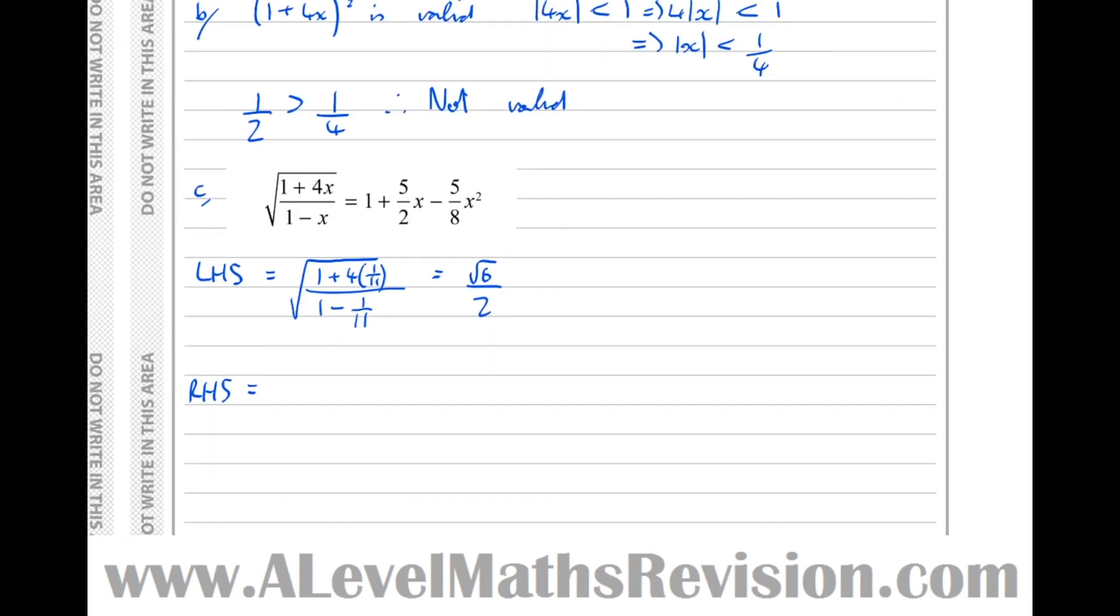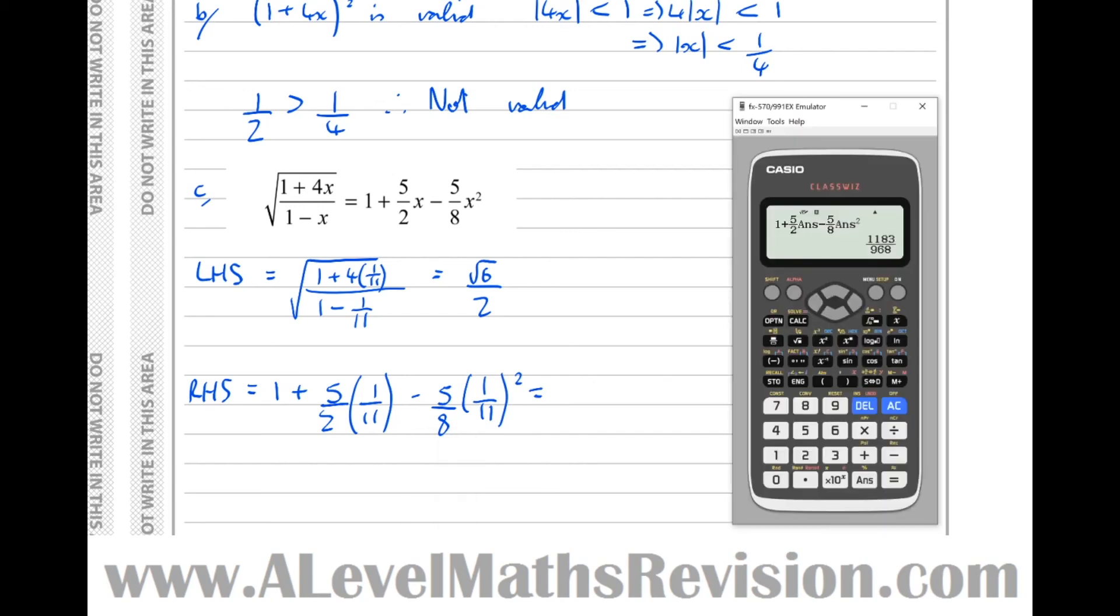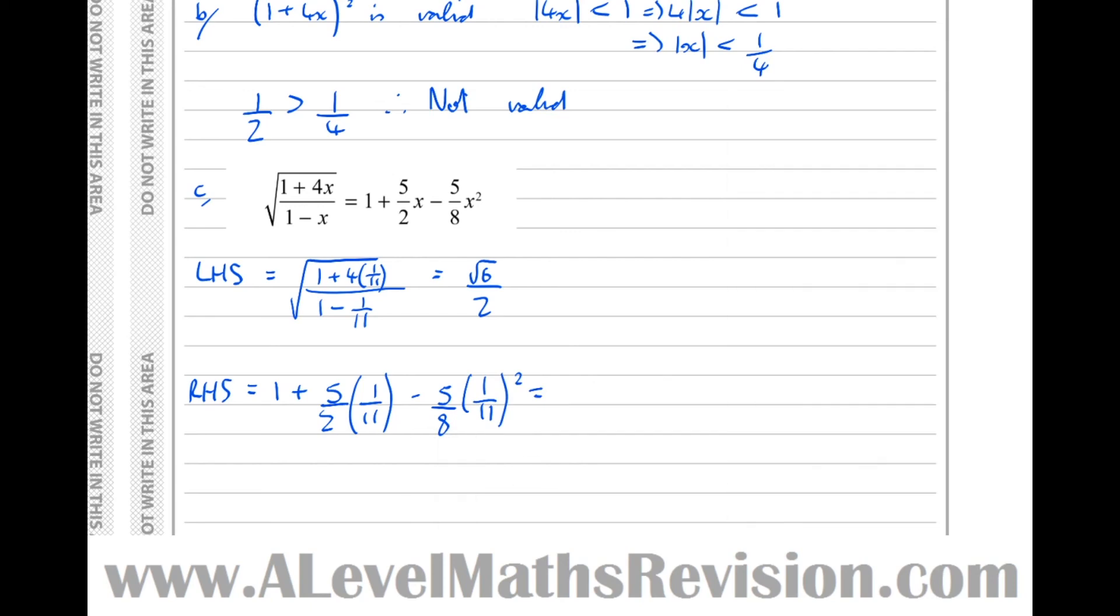So that's equal to 1183 over 968. So we've got the right hand side equals, and let's just make the effort to write down the working, 1 plus 5 over 2, 1/11, minus 5 over 8, 1/11 squared, which is equal to 1183 over 968. So that means that root 6 over 2 is approximately equal to, our approximated expression, 1183 over 968.